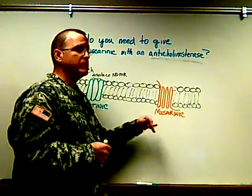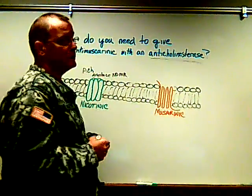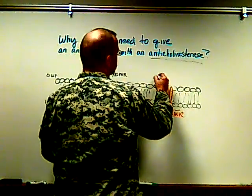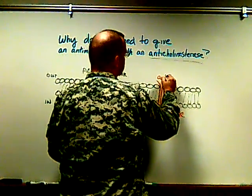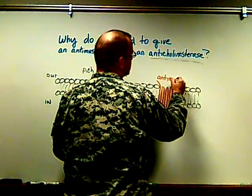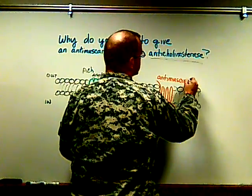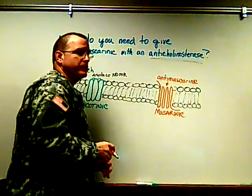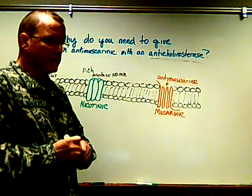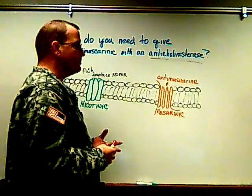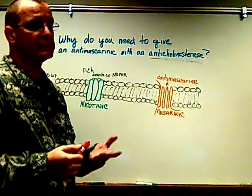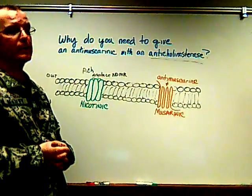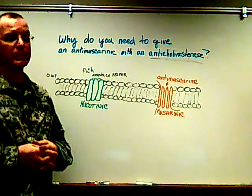We don't want those effects after we reverse the neuromuscular blocker. So we give the anti-muscarinic to block the peripheral muscarinic receptors, and we inhibit the miosis, rhinorrhea, bradycardia, bronchoconstriction, etc. That is why you give an anti-muscarinic when using an anti-cholinesterase.